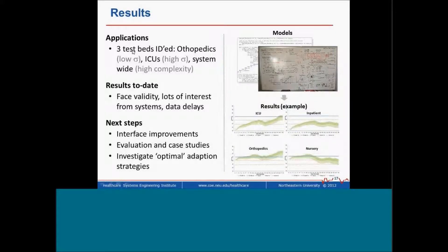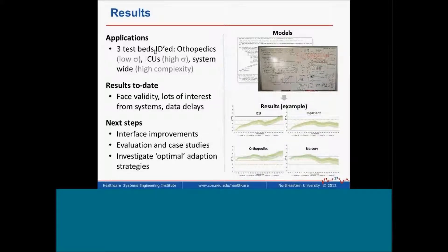In terms of where we are in the work right now, we've identified a number of testbeds — actually now more than three. We're in the process of getting, or already have, historical data from these systems. What we're doing is retrospectively validating: dial back the clock. We know what census actually worked out to be over the last couple of years. Can we go back 400 days, pretend we're running prospectively, and accurately predict the past?